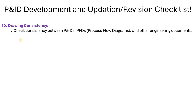Then next is drawing consistency — check consistency between the P&ID, PFD, process description, and other engineering documents, because all documents should be aligned. All documents should speak one language. For example, if your P&ID says something, your PFD says something different, and your process description says something else, there will be a very big problem.